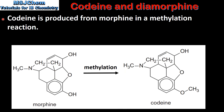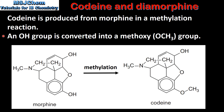Next we look at the synthesis of codeine. Codeine is produced from morphine in a methylation reaction. In the reaction an OH or hydroxyl group is converted into a methoxy group. Here we can see the methylation reaction of morphine to produce codeine, in which this hydroxyl group is converted into a methoxy group.